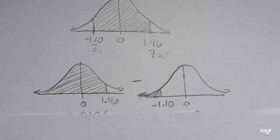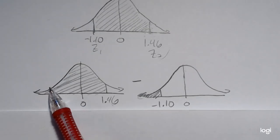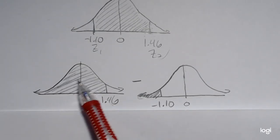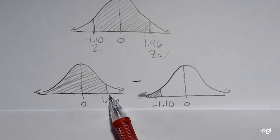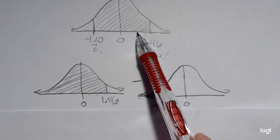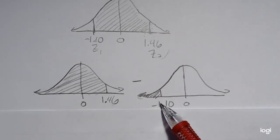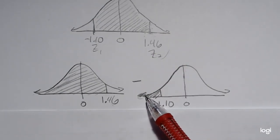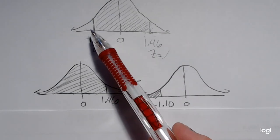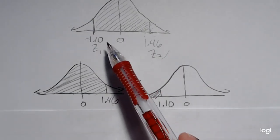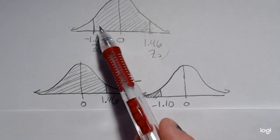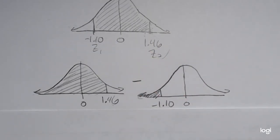So doing that, I drew a bell curve and I shaded this larger cumulative area from negative infinity up to positive 1.46. That's this larger area. And then I want to subtract out this smaller area because I don't want this tail. It's this larger area subtracting out the piece we don't want.